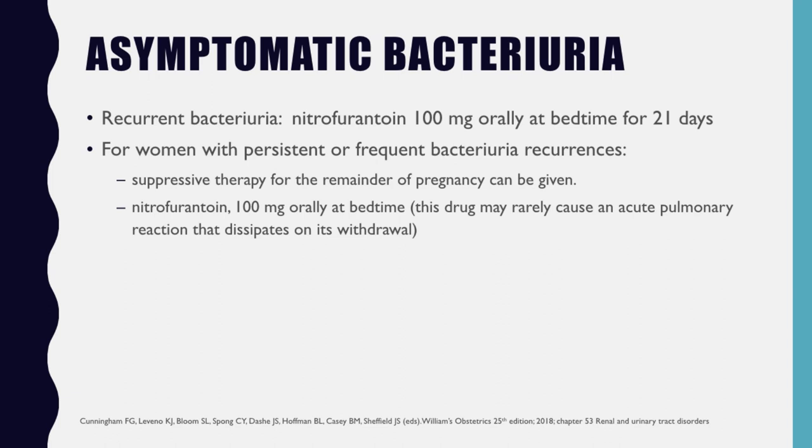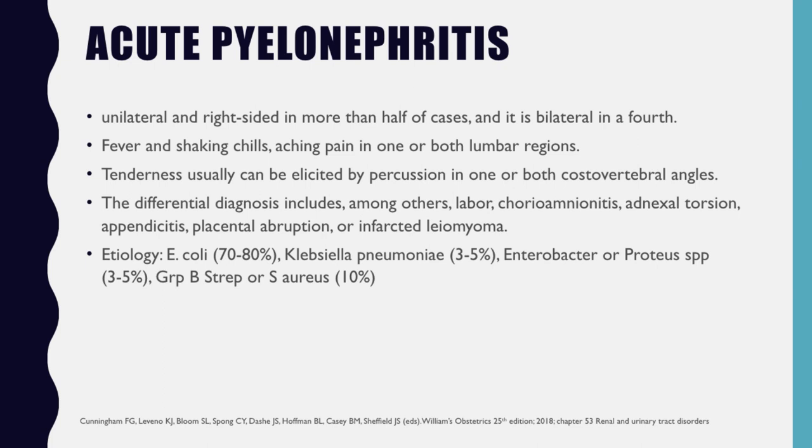This drug may rarely cause an acute pulmonary reaction that dissipates on its withdrawal. Next is acute pyelonephritis, which is usually unilateral and right-sided in more than half of cases, and bilateral in a fourth of cases. It manifests as fever with shaking chills and aching pain in one or both lumbar regions. Tenderness can usually be elicited by percussion in one or both costovertebral angles — what we call costovertebral angle tenderness.